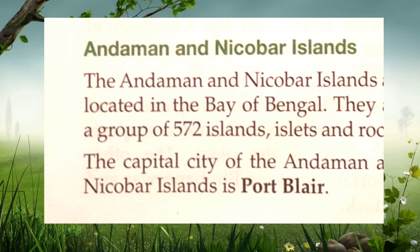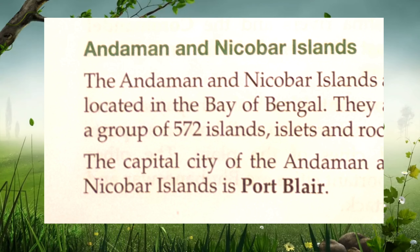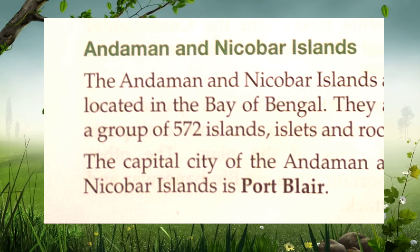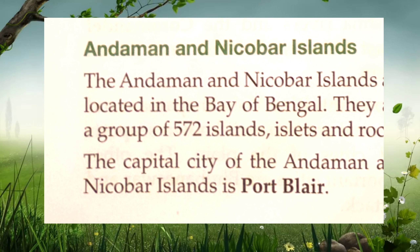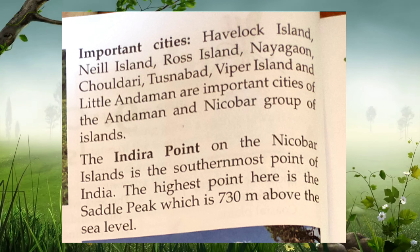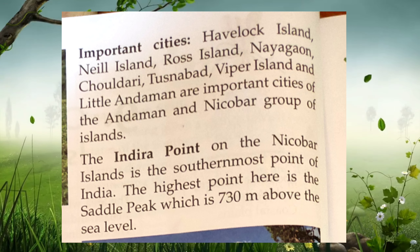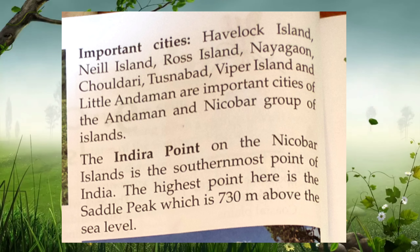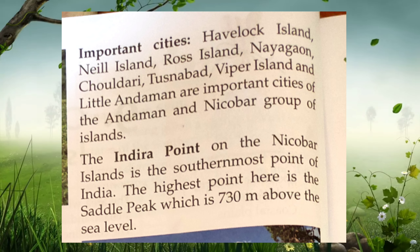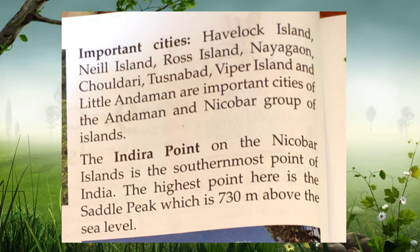We are going to discuss about the Andaman-Nicobar Islands. These islands are located in the Bay of Bengal. They are a group of 572 islands, islets and rings. The capital of Andaman-Nicobar is Port Blair. The important islands include Havelock Island, Rose Island, Viper Island and Little Andaman. Indira Point is the southernmost point of India. The highest point here is Saddle Peak, which is 730 meters above sea level.